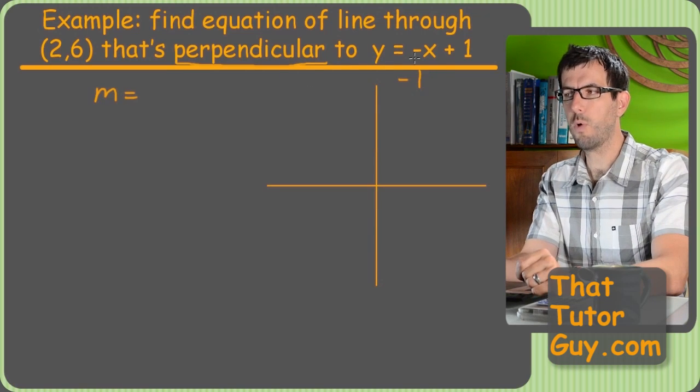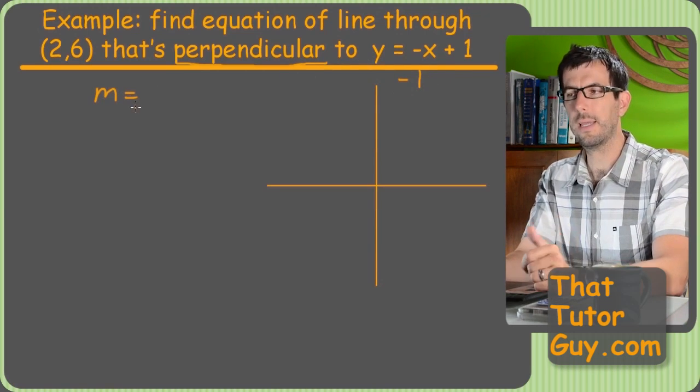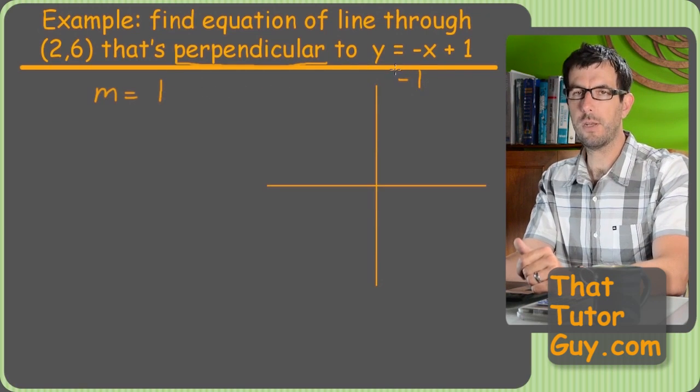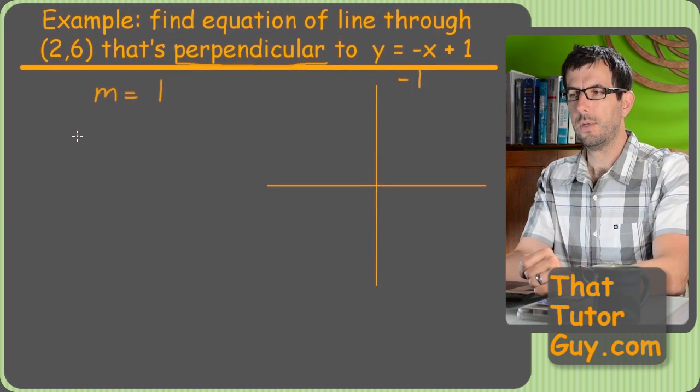So, what's the reciprocal of one? Just one. And then you negate it, it makes it positive one. So, our slope is going to be positive one. It turns out the positive one and negative one are negative reciprocals.